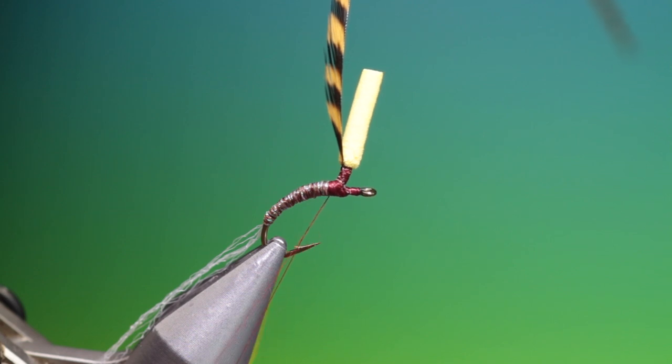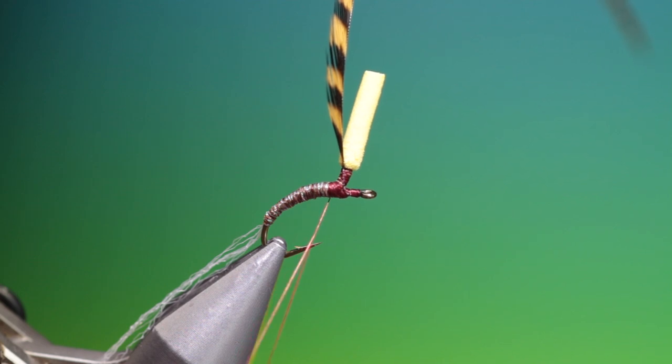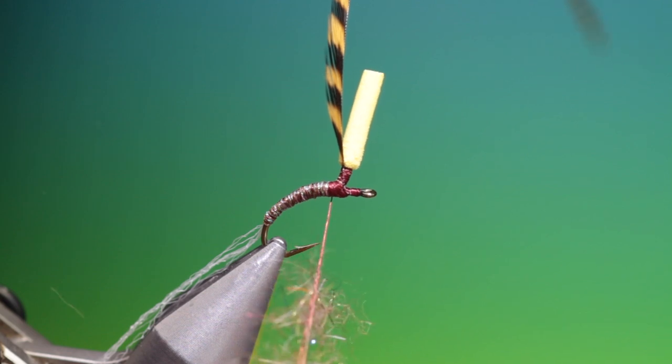And I've made a little hare's ear antron blend that I'm going to use for the thorax on this March brown. So just put that in.